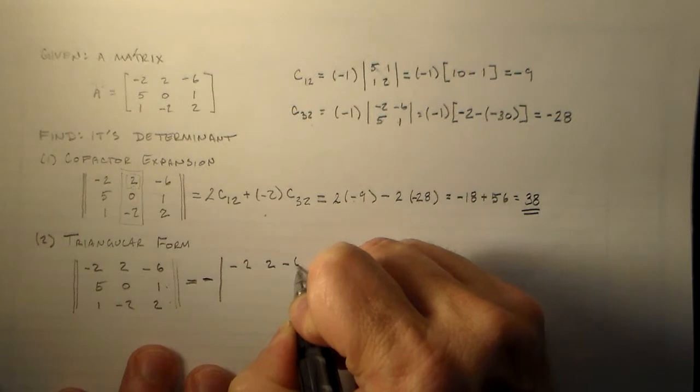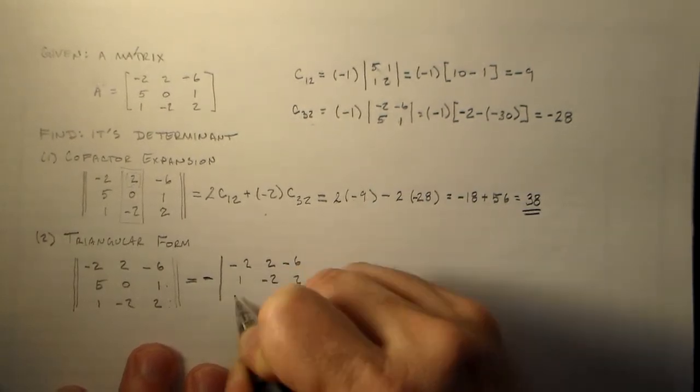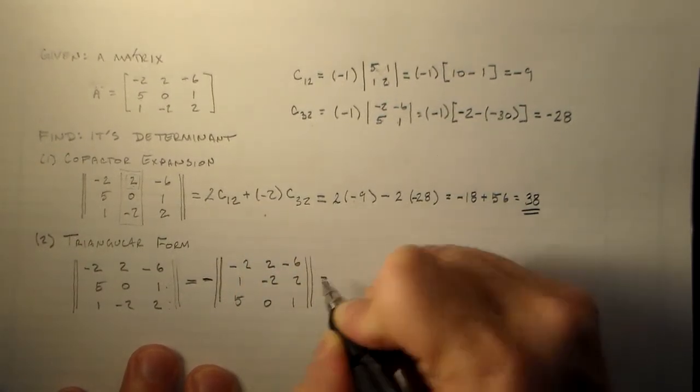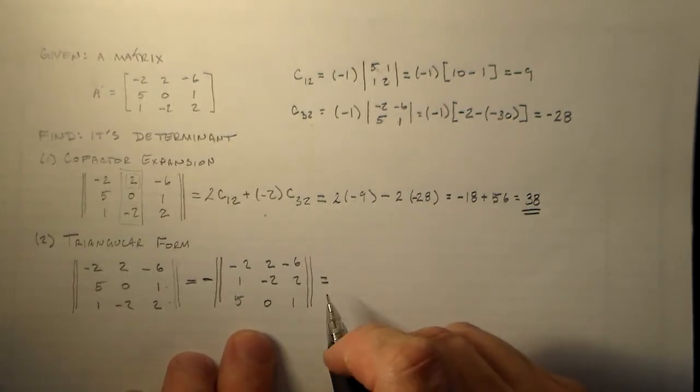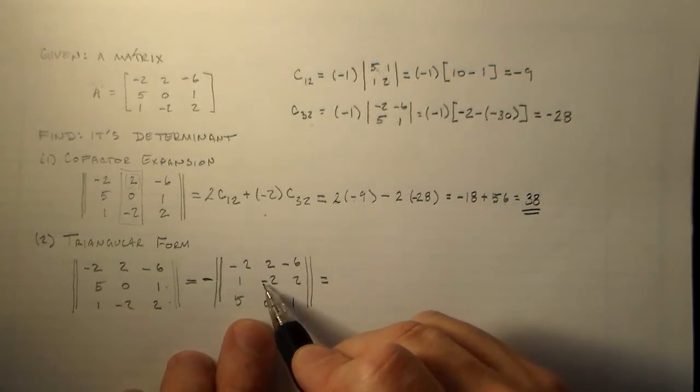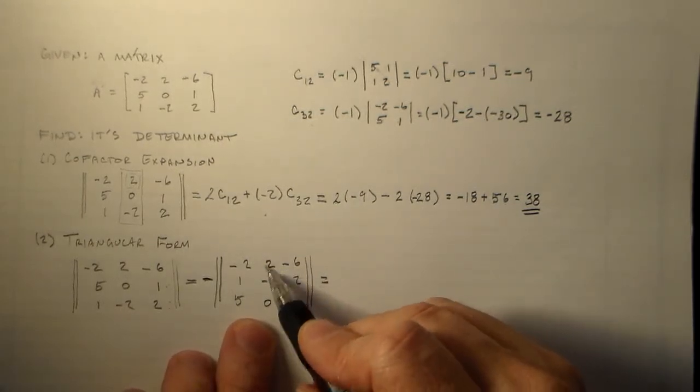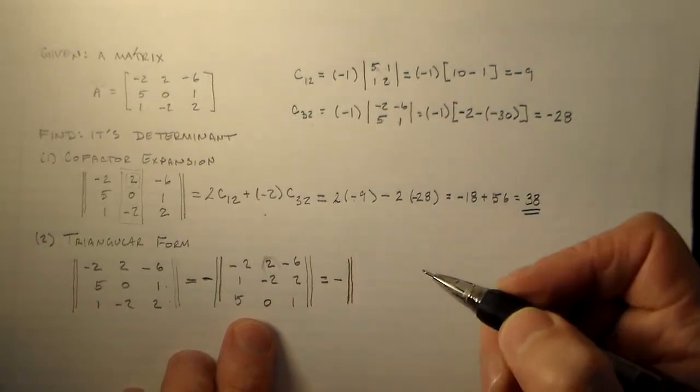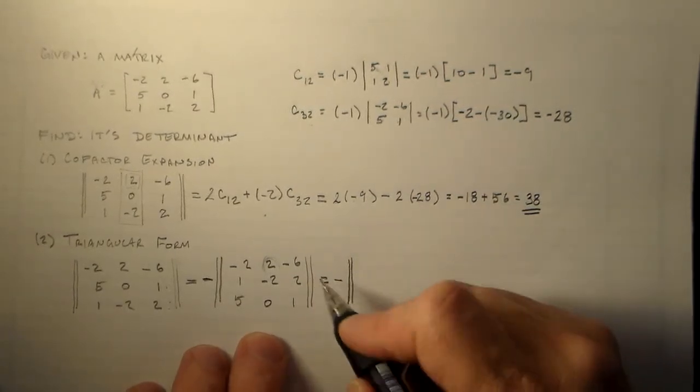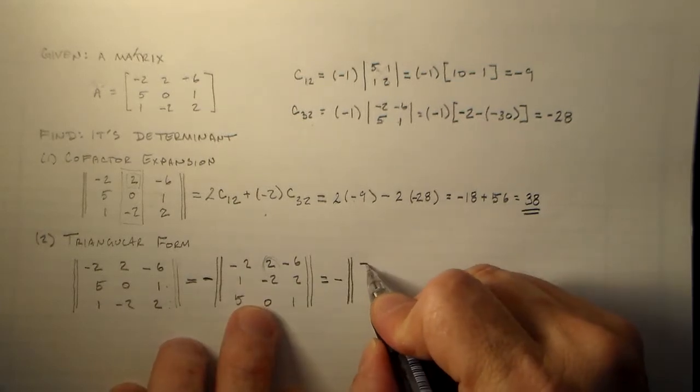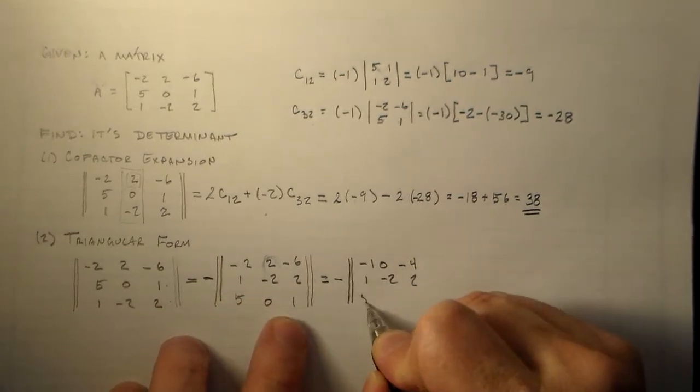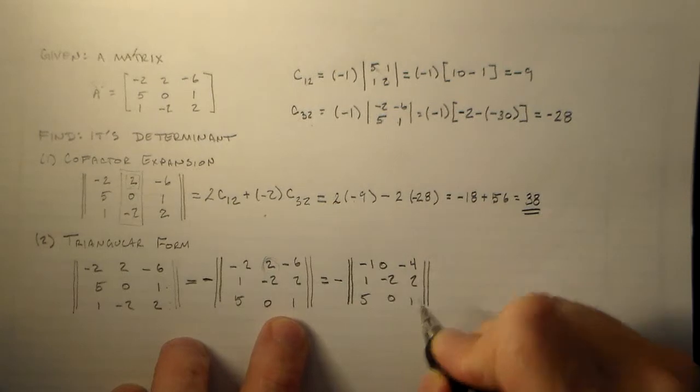So minus two, two, minus six. One, minus two, two. Five, oh, one. Okay. So, nothing major there. Then what I'll do is I'll work on getting the triangular form by getting rid of this number here. So, we'll just add this and this. Right. So, if I add two rows and replace one of them, then there's actually nothing that happens to the determinant. That's one of your rules from your book. So, add these up, you get minus one, zero, minus four. And now we still have one minus two, two, and we didn't do anything down here at 501.